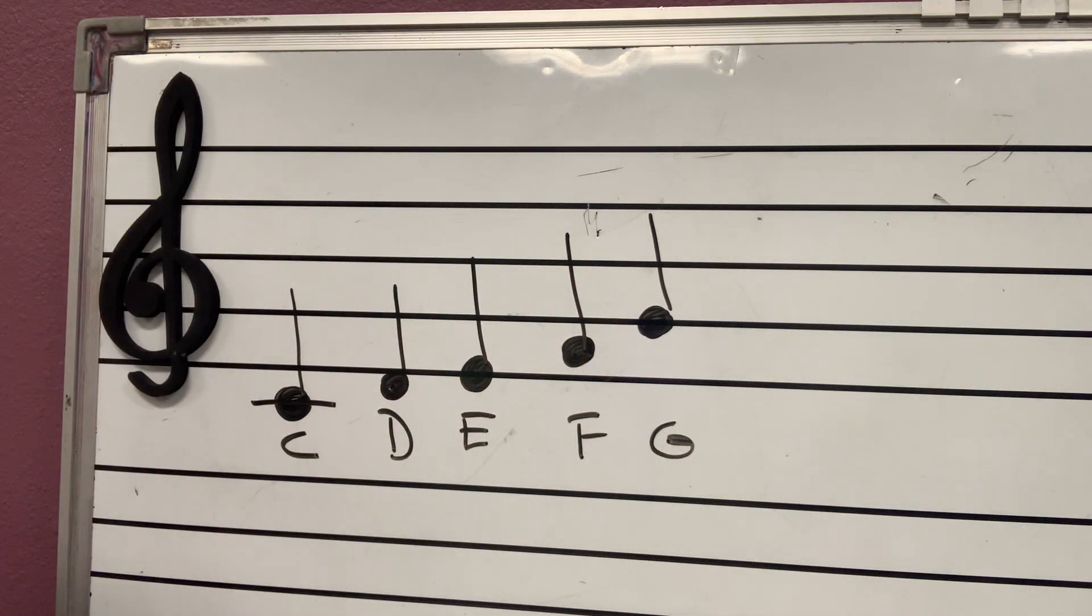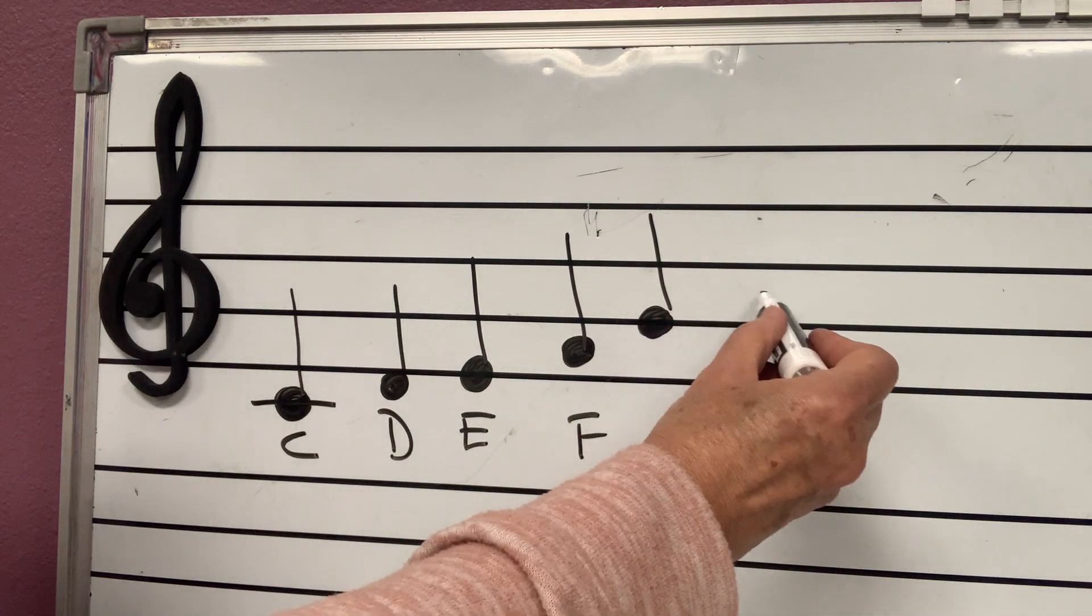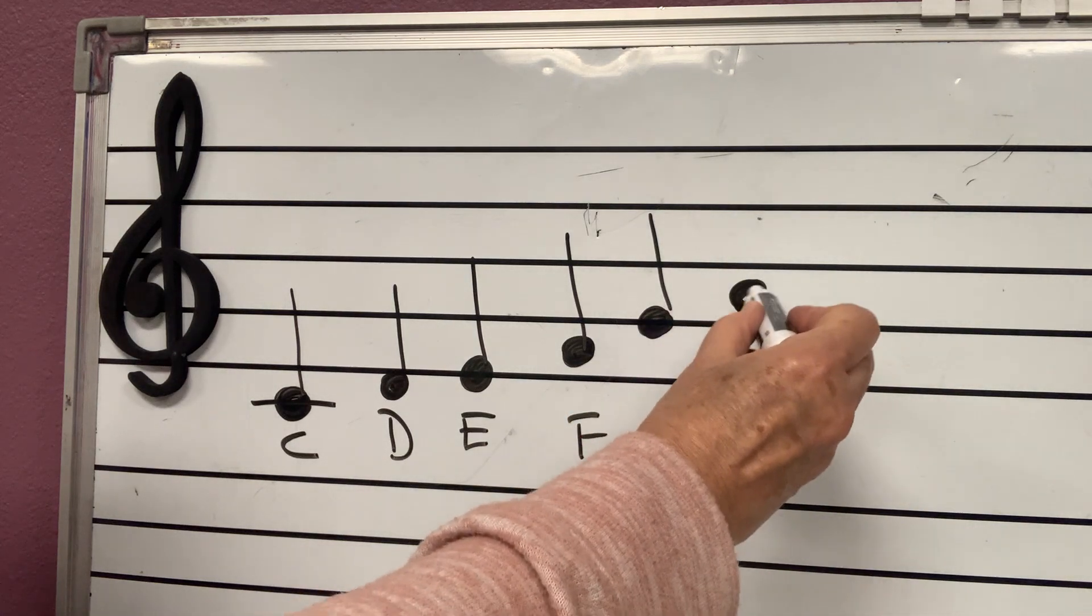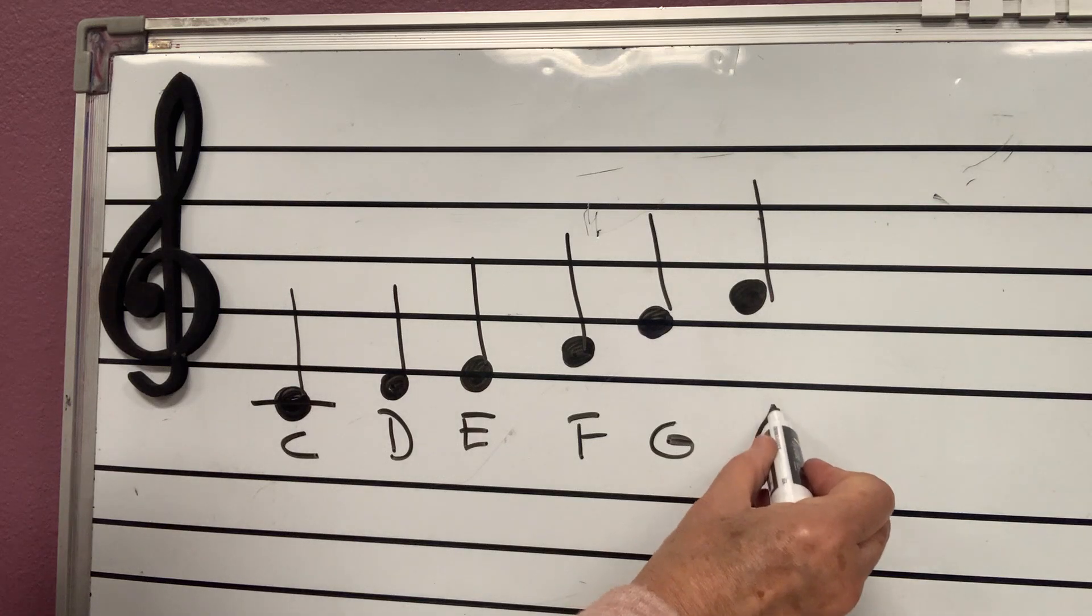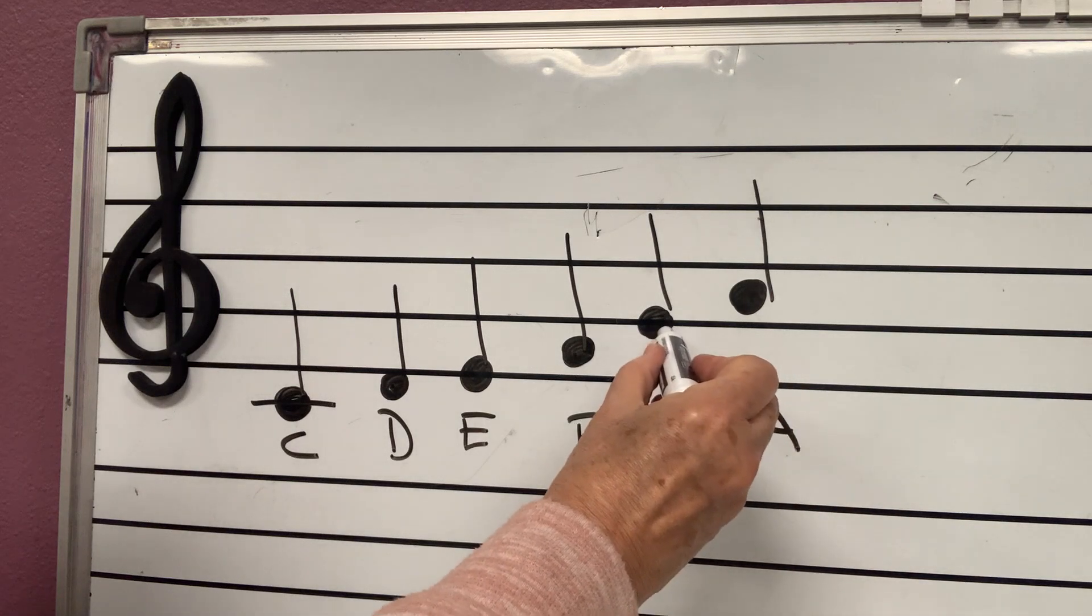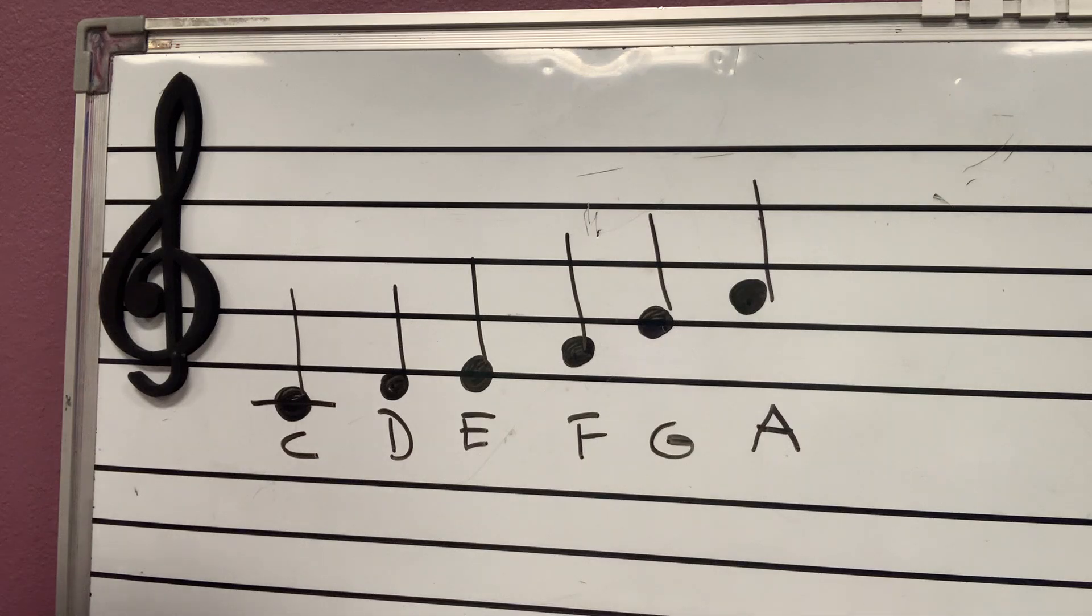We know those notes very good, so we can figure who is this note going to be, right? Can you figure who's after G? After G we don't have H in music, we have A. So if this is G, the next one has to be A.